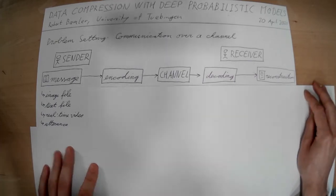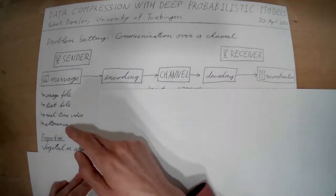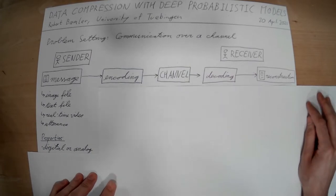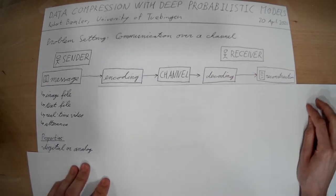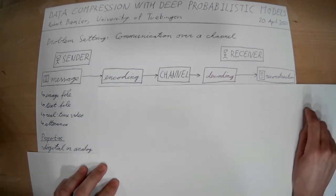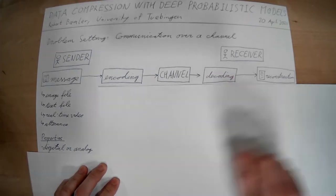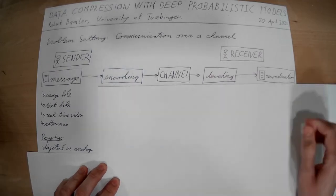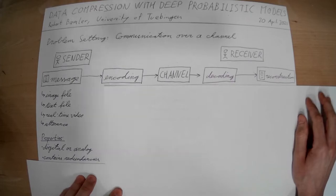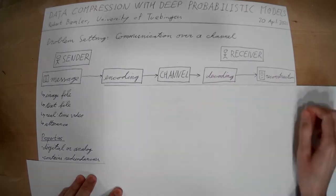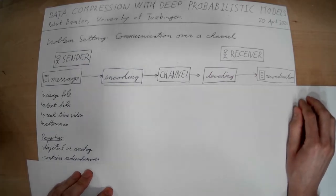These are all different kinds of messages with different properties. For example, they could be digital or analog — computer files are digital, but when we talk to each other those are analog messages. Another important property is that messages typically have a very clear structure. For example, an HTML file has to follow the grammar of HTML — it will start with a doctype, then the string HTML in angular brackets, and so on. This kind of structure leads to certain redundancies, since that doctype and beginning HTML string is something you can expect — it is, in some sense, redundant information.